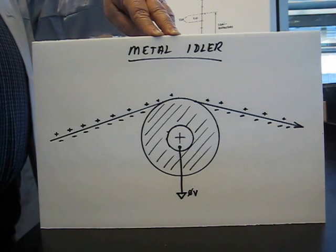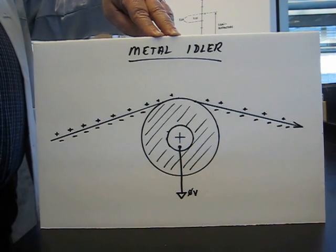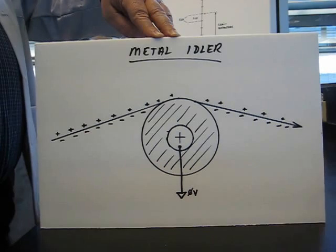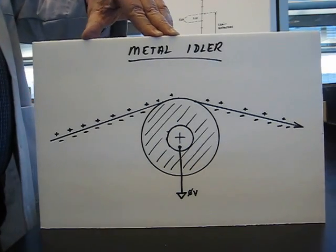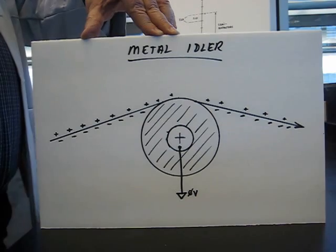There are product and process effects such as web tracking, wrinkling, and that sort of thing. Static can attract dirt and contamination. It can damage electronics, and then there's always the danger of fires and explosions if solvents are being used such as a gravure coat or something like that.